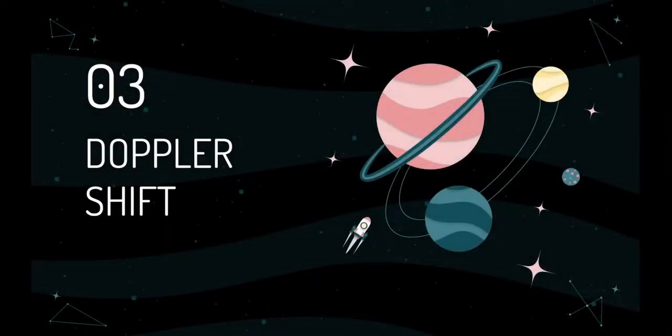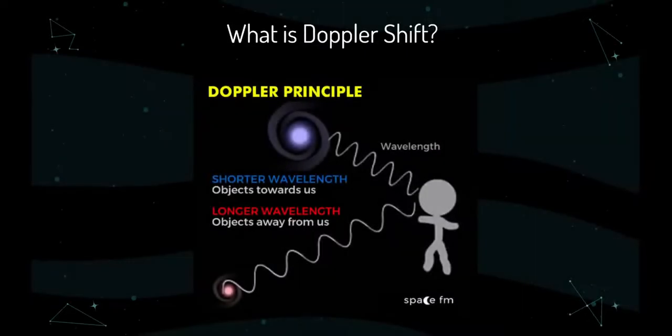Third, let's talk about the Doppler shift method, which is very closely related to the radial velocity or wobble method. Stars and planets gravitationally attract one another, causing them to orbit. The same is true for light waves.